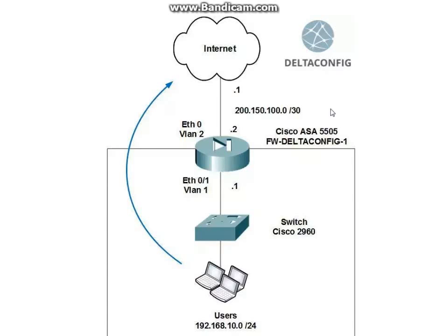Let's suppose that we need to configure a new Cisco ASA. The basic configuration means that we have a local network, we have the connection to the internet, and we need to allow our inside users to go to the internet. The basic things we need to do are to define the interfaces — the inside and outside interfaces — then define the default gateway so our ASA knows where to send all incoming packets, and then configure NAT so our private LAN addresses can be translated into the public address of the ASA.